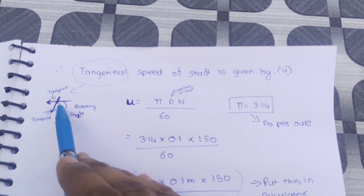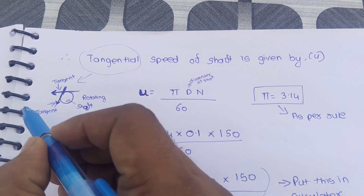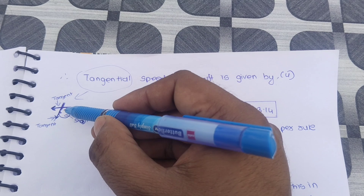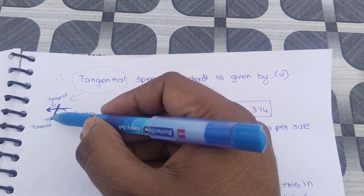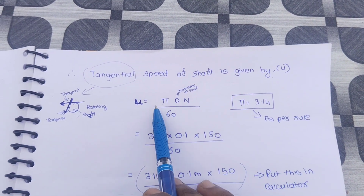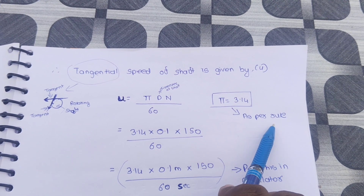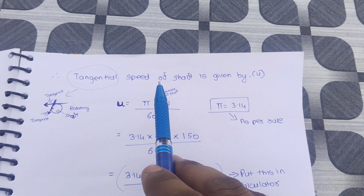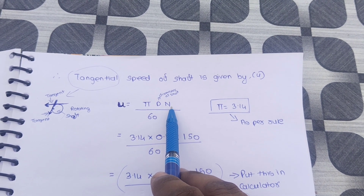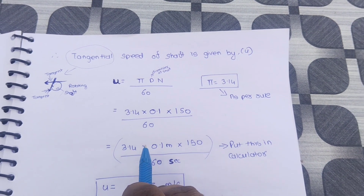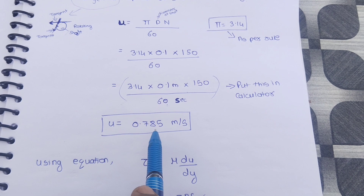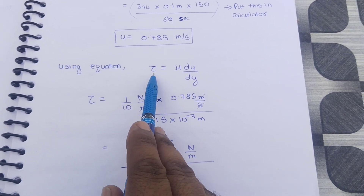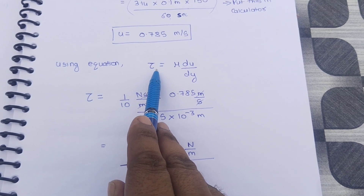First we find the tangential velocity. The tangential speed of the shaft is given by u = πDN/60. Pi is the fixed value 3.14, D is the diameter 0.1 meters, and N is 150 rpm. Substituting: u = 3.14 × 0.1 × 150 / 60 = 0.785 meters per second.